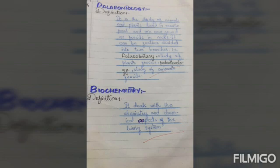Our side heading is Paleontology. Definition: it is the study of animals and plants that lived in the remote past and are now found as fossils in rocks. It can be further divided into two branches — Paleobotany: study of plant fossils; and Paleozoology: study of animal fossils.